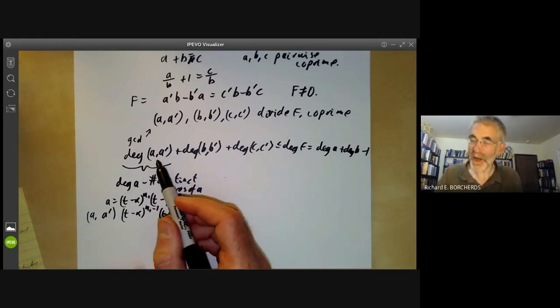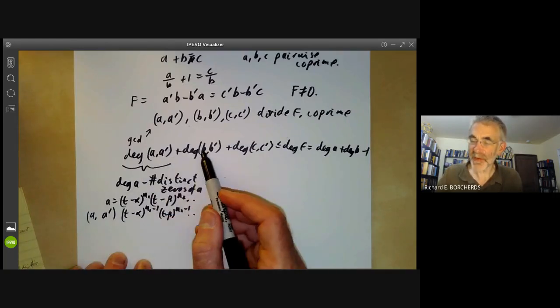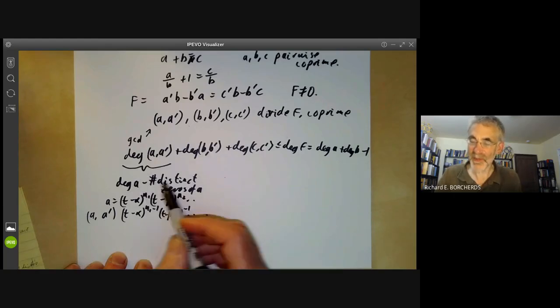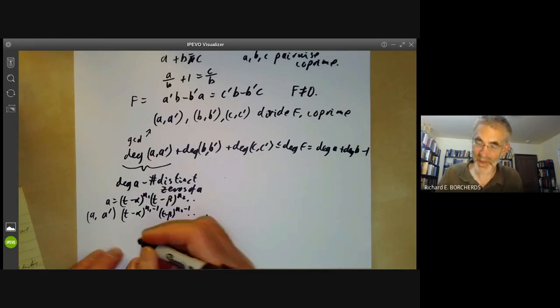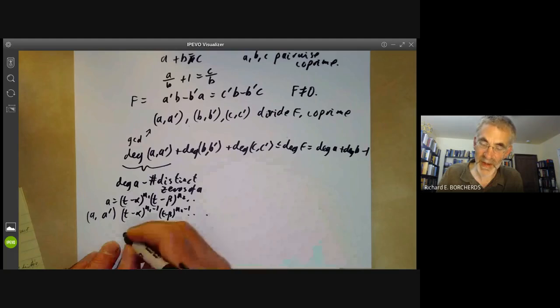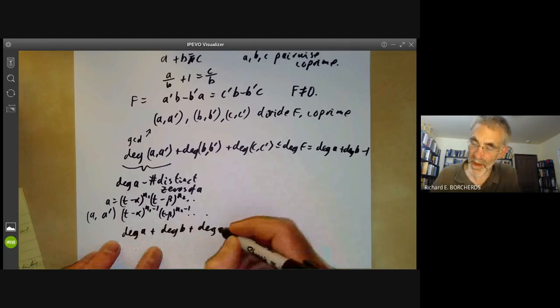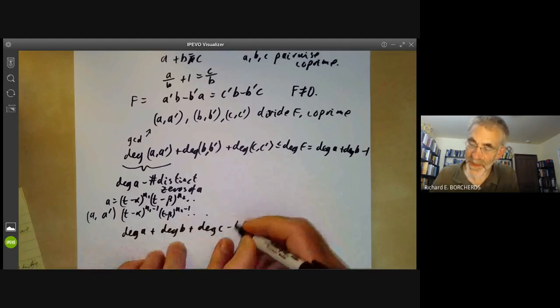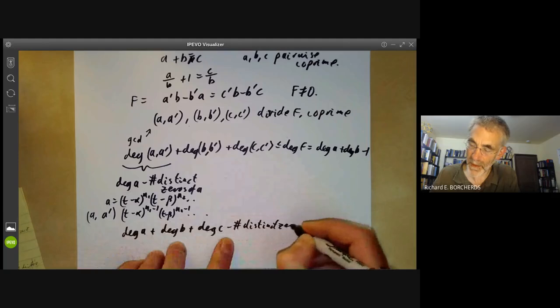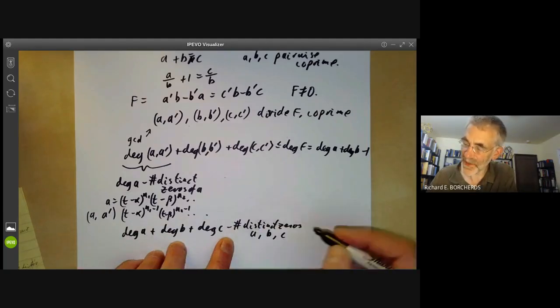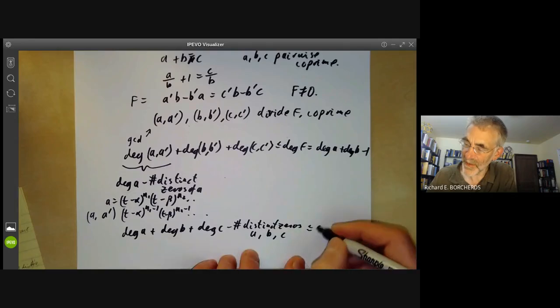So similarly, the degree of the highest common factor of B and B prime is the degree of B minus the number of distinct zeros and same for C. So the degree of A plus the degree of B plus the degree of C minus the number of distinct zeros of A, B and C